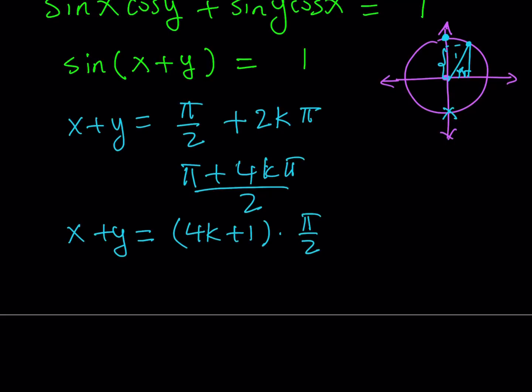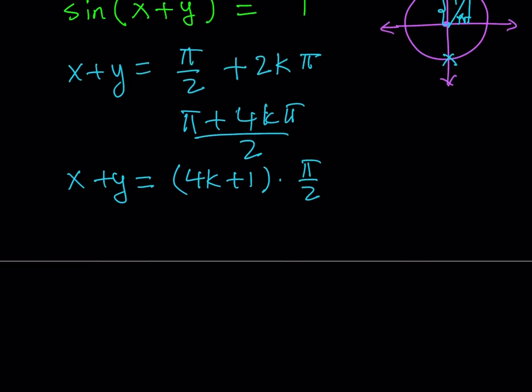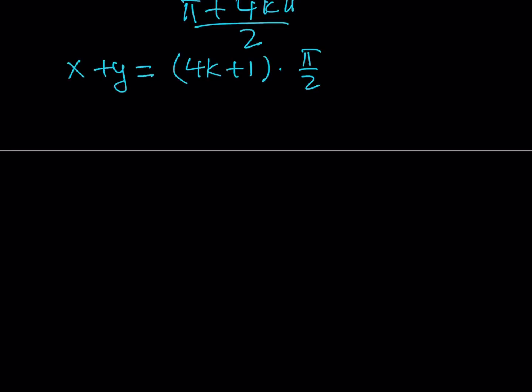Now, this is important because if x plus y is, for example, pi over 2, then you can safely say that sine and cosine of x and y are related. What is that supposed to mean? It just means that sine x equals cosine y, because you're basically talking about two angles that are complementary.